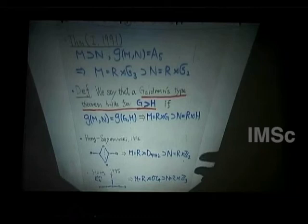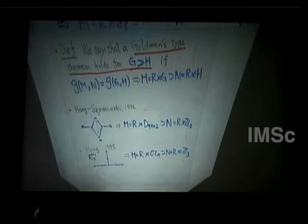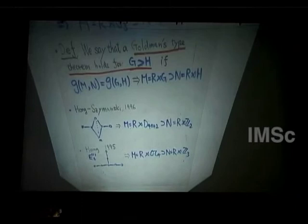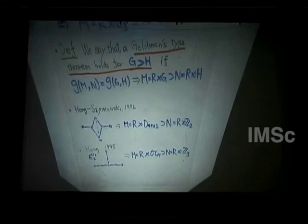Haagerup and Zimansky gave a Goldman-type theorem in 1996, where the larger group is a dihedral group of order 4n+2 and the smaller group is Z/2Z (which is not normal). Haagerup also obtained another Goldman-type theorem. When I saw their result, I realized they had a really nice argument — considerably better than my proof — and I looked for graphs allowing similar characterizations.